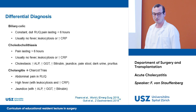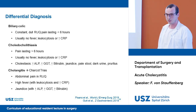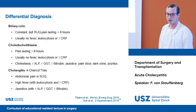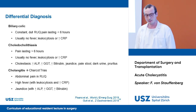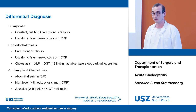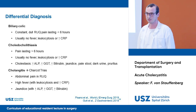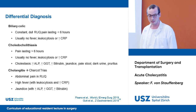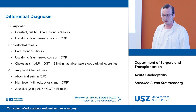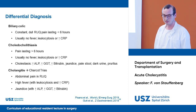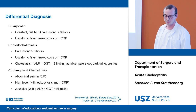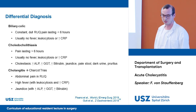Other differential diagnoses are biliary colic, which presents with constant dull right upper quadrant pain lasting under six hours, with no fever or systemic signs of inflammation. Choledocholithiasis presents similarly with pain over six hours, but also no fever and with signs of cholestasis. Cholangitis presents with the Charcot triad: abdominal pain in the right upper quadrant, high fever with leukocytosis and rising CRP, as well as jaundice with other features of cholestasis.